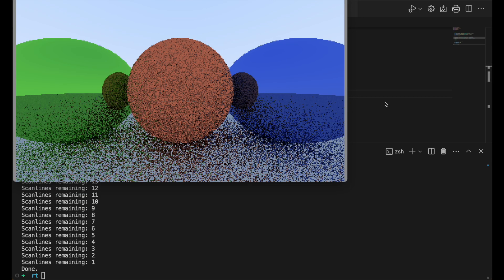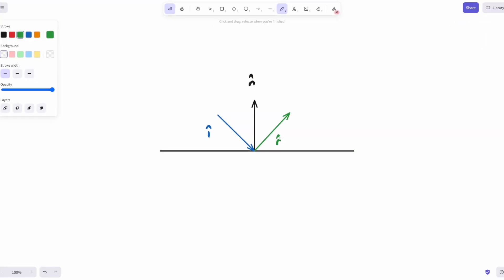Now that we have these material classes, we've encapsulated their behavior and can add some interesting effects. For example, we'll add a fuzz factor to the metal material. As Dr. Shirley states, we can randomize the reflected direction by using a small sphere and choosing a new endpoint for the ray. The bigger the fuzz sphere, the fuzzier the reflections will be. We max out the radius of this sphere to unity.